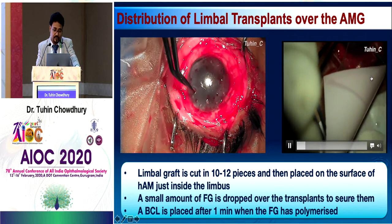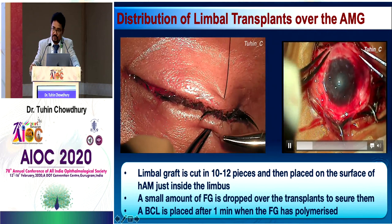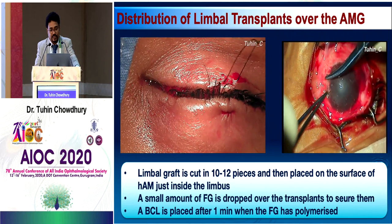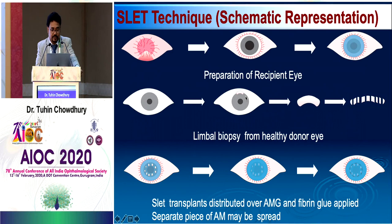In a small child, a BCL and another layer of amniotic membrane are placed over the limbal tissues to protect these precious grafts. The schematic: prepare the recipient eye, release symblepharon, remove pannus, put amniotic membrane, take limbal biopsy, cut into 10–12 pieces, separate and distribute over the amniotic membrane, then put another piece of amniotic membrane over that.